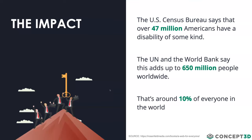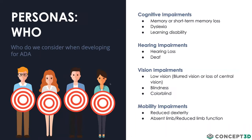We'll also cover what the acronym POUR stands for and why it matters, how we use that in our product design, and then we'll have a screen reading demo followed by a Q&A section. As a little background on accessibility, the U.S. Census Bureau estimates around 47 million Americans have a disability of some kind. Globally, that number is around 650 million.